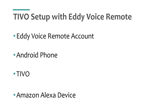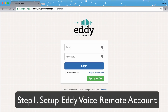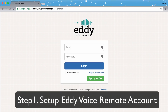You can take five minutes to do this. You need a couple of things: an Eddie Voice account, an Android phone, a TiVo, and an Amazon Alexa device. We will do this in five steps.